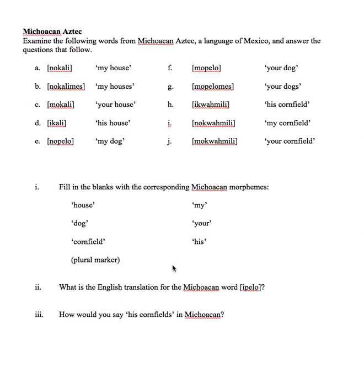The best place to start when looking at a morphological analysis problem for a language you know nothing about is to look at forms that are very similar. Maybe the best place to start is by looking at their glosses, or their translations in English. So if we look at A and B, we can see that the translations are very similar. For A, we have 'my house,' and that's 'nokali.' We need to break that down and figure out what part means 'my' and what part means 'house.'